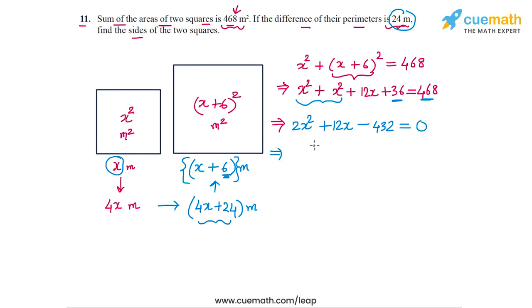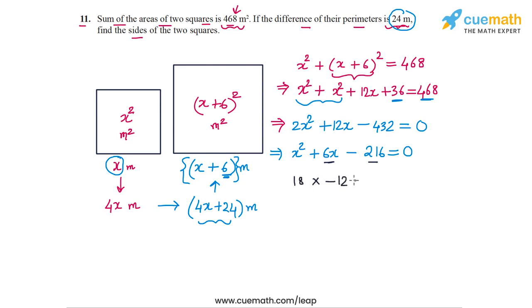We can cancel the common factor of 2 on both sides to get x squared plus 6x minus 216 equals 0. Now we solve this quadratic by splitting the middle term 6x. We need two numbers whose product is minus 216 and whose sum is 6. Those two numbers are 18 and minus 12, because 18 times minus 12 equals minus 216, and 18 plus minus 12 equals 6.